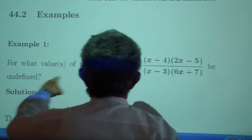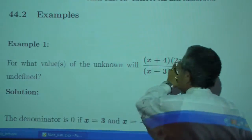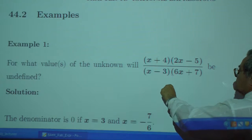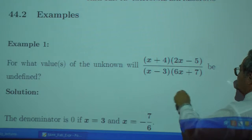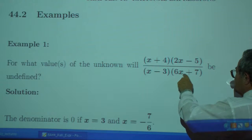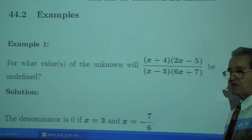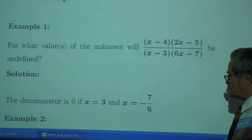Example 1. For what values of the unknown will the following be undefined? The denominator cannot be 0. x is 3, that is in trouble, and x which is equal to negative 7 over 6. That gives us trouble also. We cannot allow those two values of x.